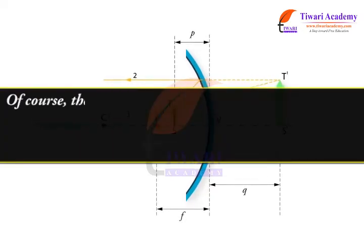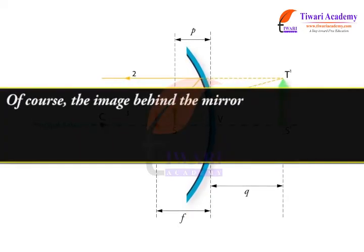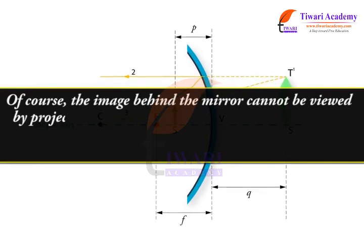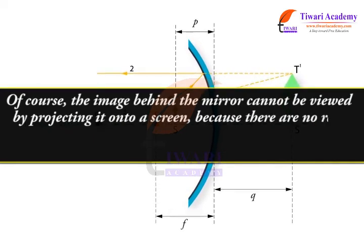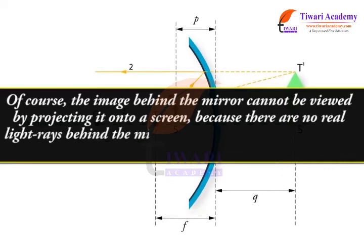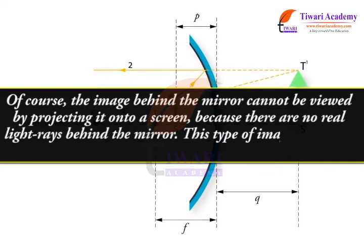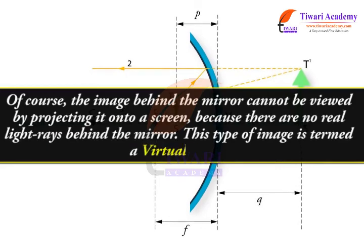Of course, the image behind the mirror cannot be viewed by projecting it onto a screen because there are no real light rays behind the mirror. This type of image is termed a virtual image.